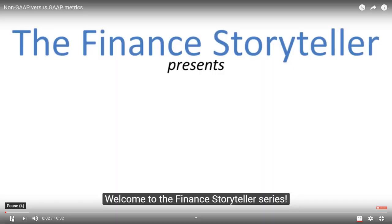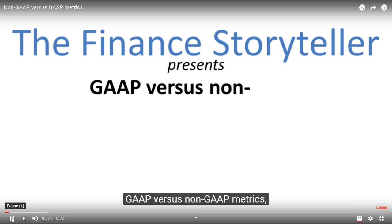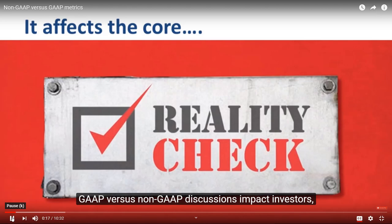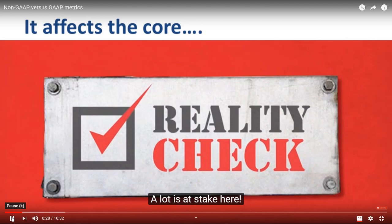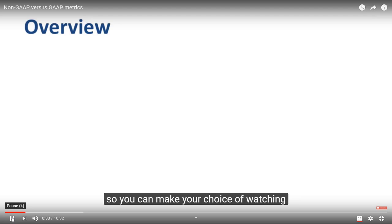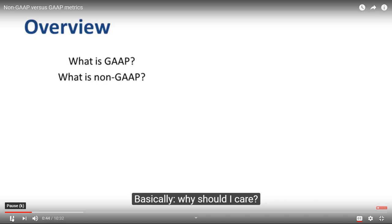Welcome to the Finest Storyteller series. In this video, I'm going to discuss GAAP vs. non-GAAP metrics, which is the hottest topic in financial reporting. It affects the very core of a company — what is the reality of its financial performance? GAAP vs. non-GAAP discussions impact investors, analysts, financial journalists, company leadership, employees, the audit committee, and external auditors. A lot is at stake here. This video is structured in sections: first, what GAAP and non-GAAP mean and why you should care; second, common non-GAAP metrics; third, concerns about non-GAAP reporting; and fourth, guidance issued by regulators to improve transparency.